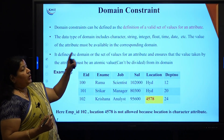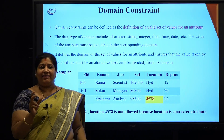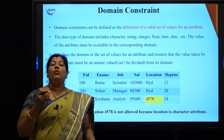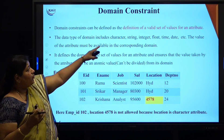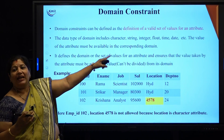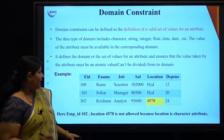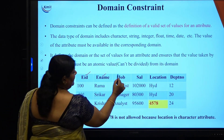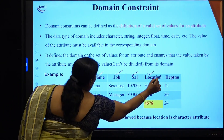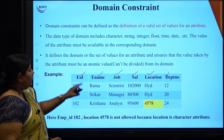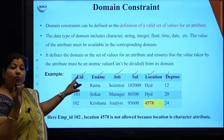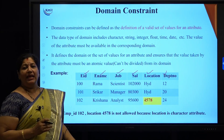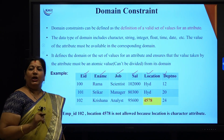Coming to the domain constraint, the word domain itself says it belongs to which set. That means what are the valid set of values for that particular attribute? Every table has columns like EID, E name, job, salary, location and department number. What should be the valid values for the attribute EID, E name, job, etc.? That defines the domain.